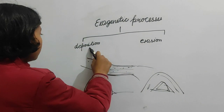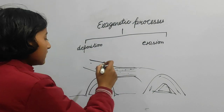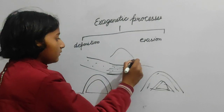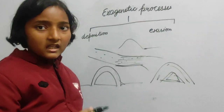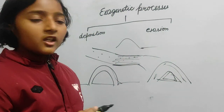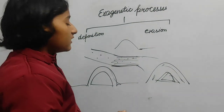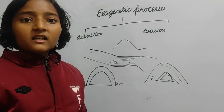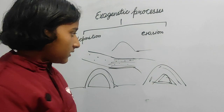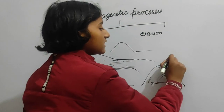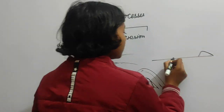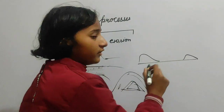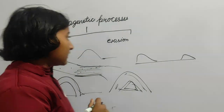For deposition, there are sand dunes. If you have visited deserts, you might have seen shifting sand dunes. The sand dune will be here first, then it will be shifted here with the wind.